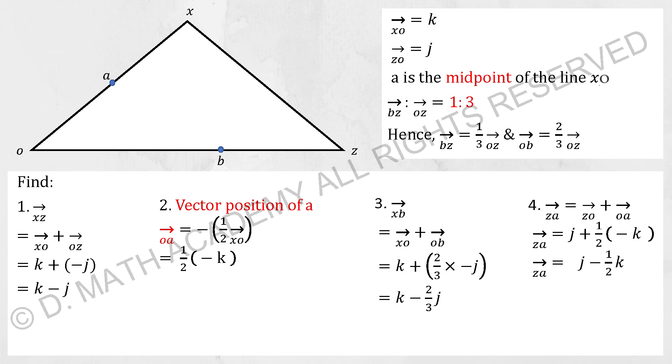For the second question, we have vector position of A. It is actually from origin to A itself. Since they mentioned A is the midpoint, hence it will be half of K.